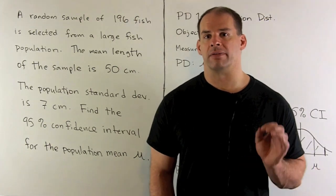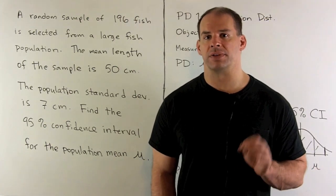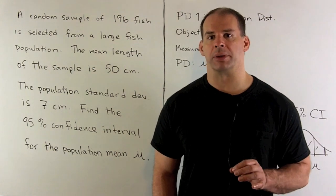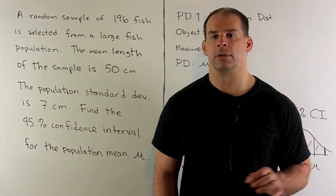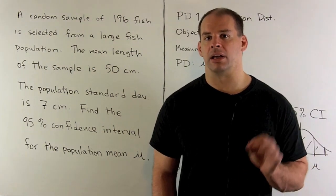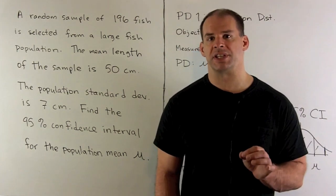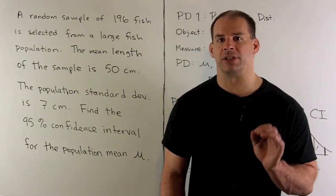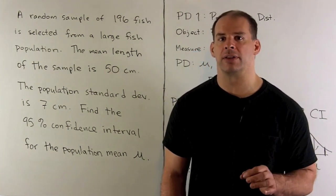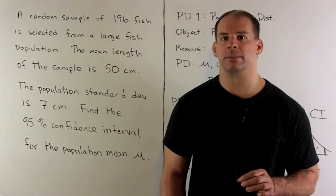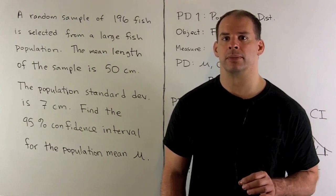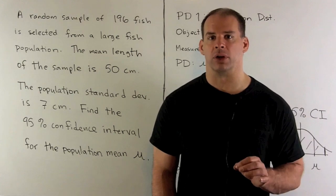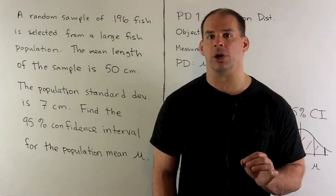A random sample of 196 fish is selected from a large fish population. The mean of the lengths in our sample is 50 centimeters, and the population standard deviation for length is 7 centimeters. Find the 95% confidence interval for the population mean mu.